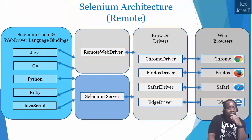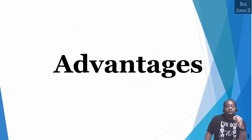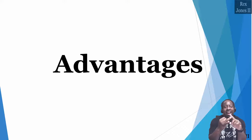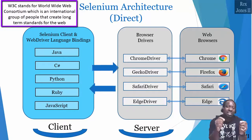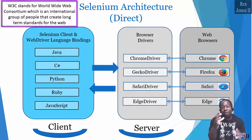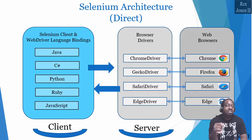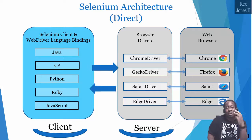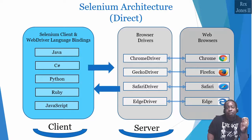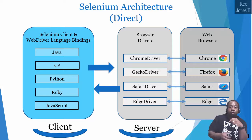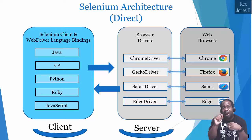For W3C WebDriver Protocol, the advantages are standards, stability, and actions. W3C stands for World Wide Web Consortium, which is an international group of people that create long-term standards for the web. With that first advantage of standards, our test scripts run consistently on each browser. There were times with Selenium 3 that some commands performed inconsistently on different browsers. Since Selenium 4 is compliant with W3C WebDriver, there is no more required encoding and decoding of the API request.